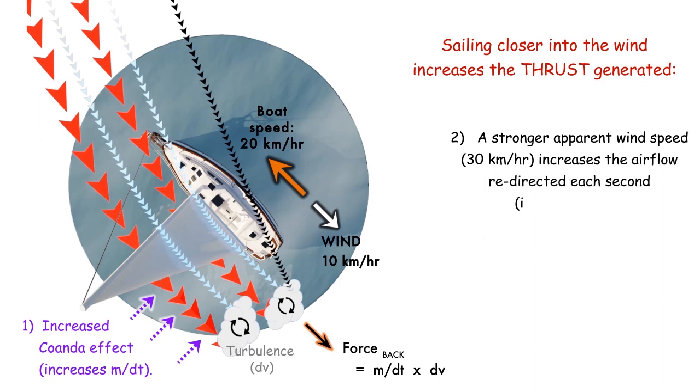Also, sailing more directly into the wind increases the apparent wind speed. The boat is moving faster relative to the wind, which also increases the mass of air redirected by the sail each second.